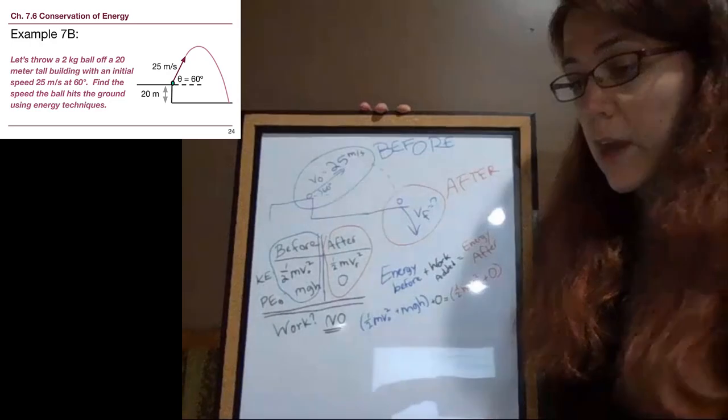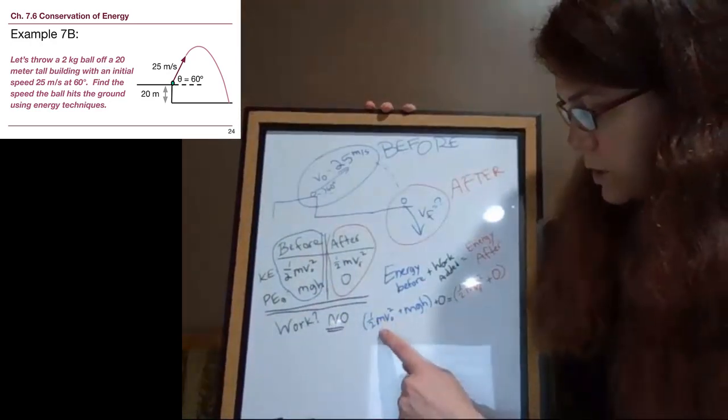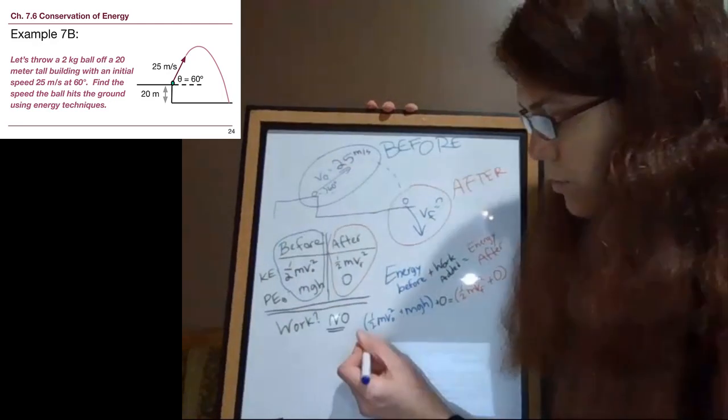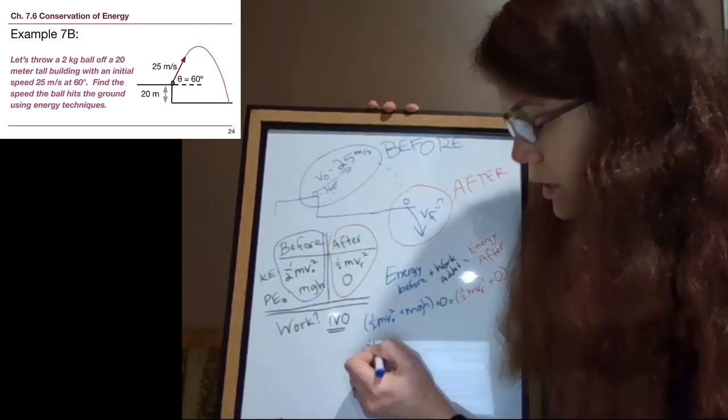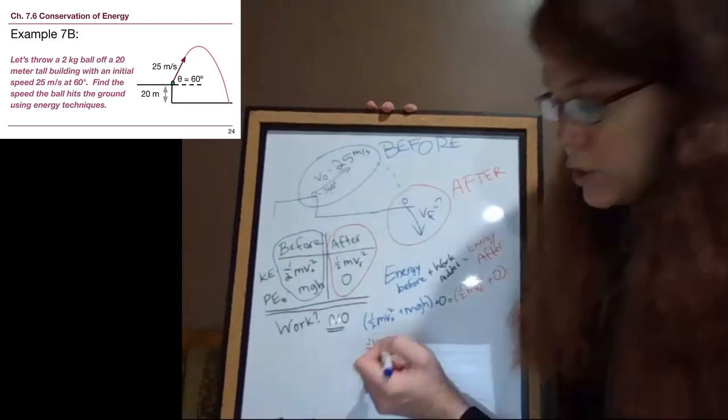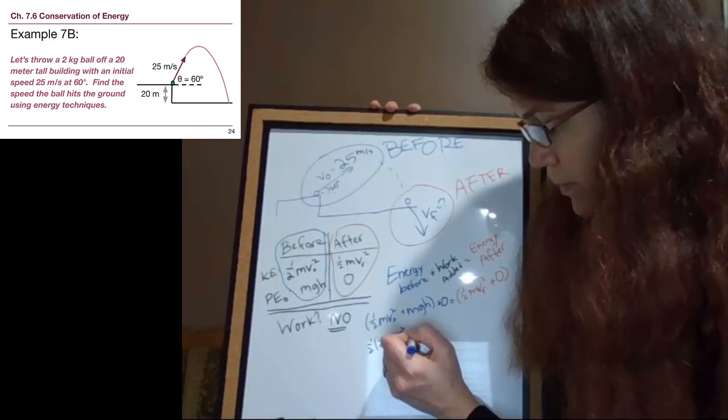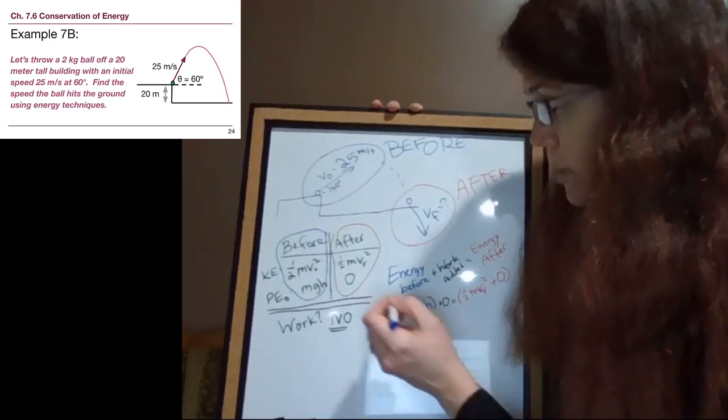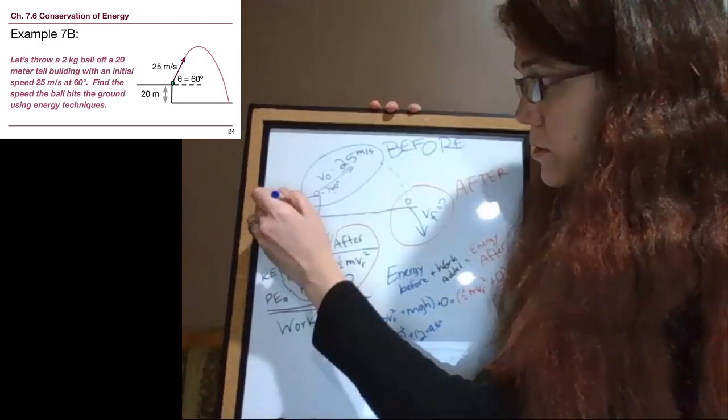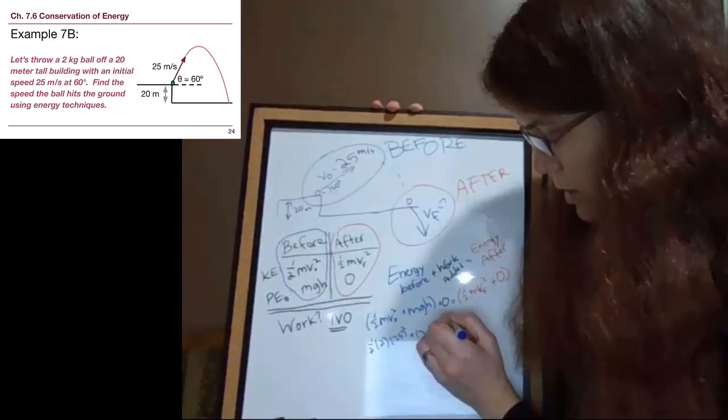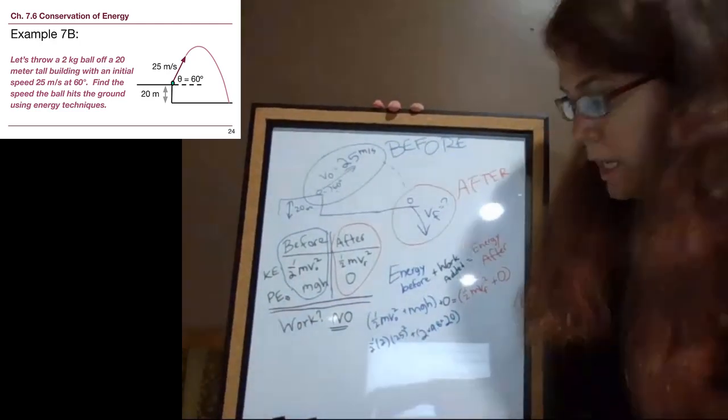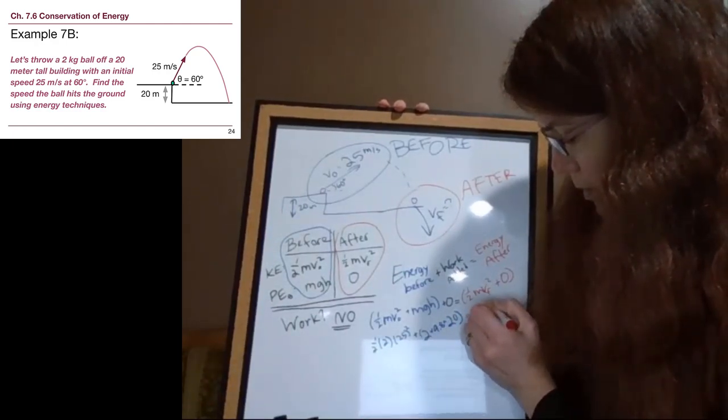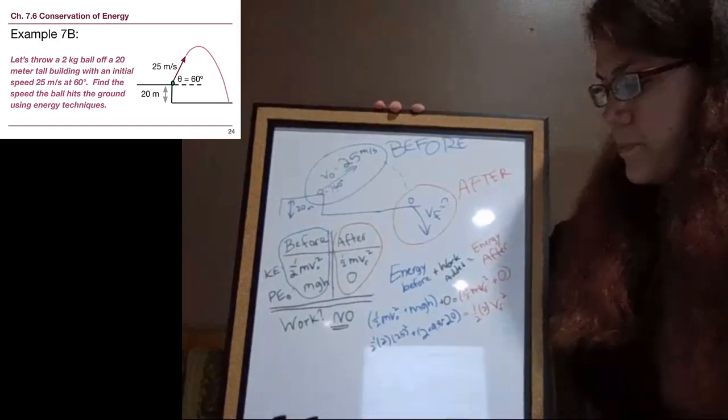So now that we have all of the terms, we see that there are three separate terms that aren't zero. We can start to plug in the numbers from the problem. So we have one half, the mass here is two. And then the initial velocity is 25. Then for this term, we have two times nine point eight times the height here is 20 meters. So if we want to write that in, we can, 20 meters. And then we ignore the zero. And that's going to equal on this side one half times two times v final squared.